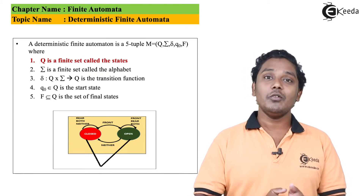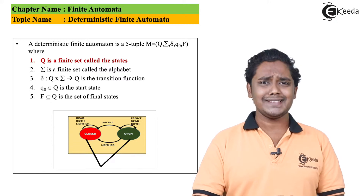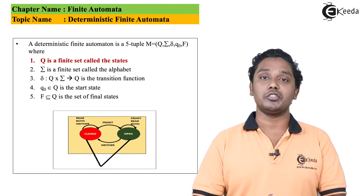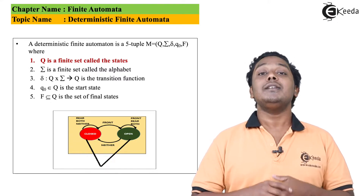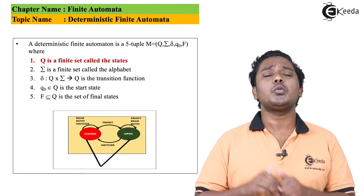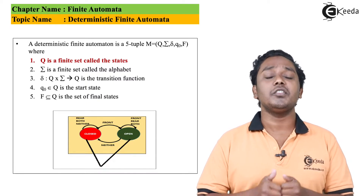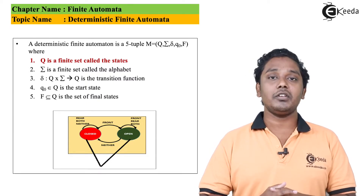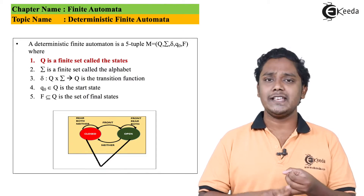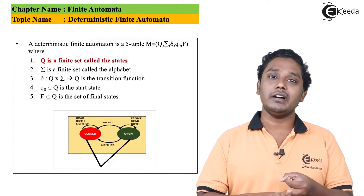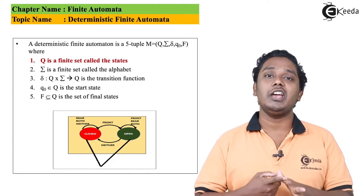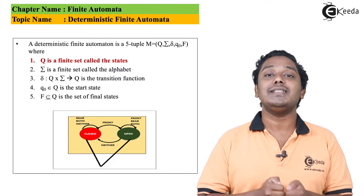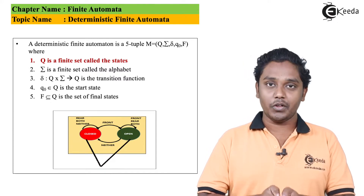Now in terms of mathematics, let's see the definition of Deterministic Finite Automata. A DFA is a quintuple — that means it is made up of five components. They are represented using the letters Q, Σ, δ, q₀, and F. Let's individually see what these components are.